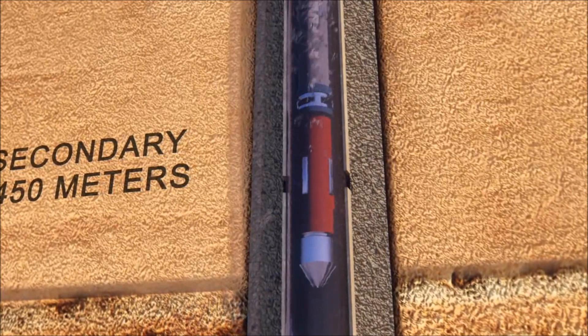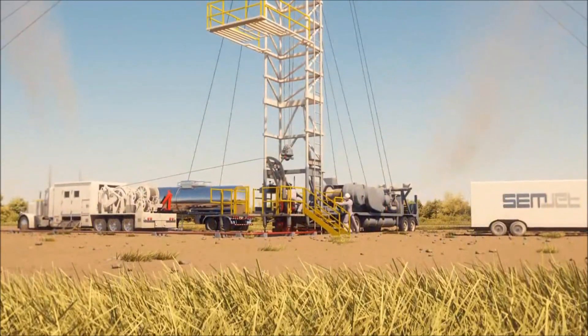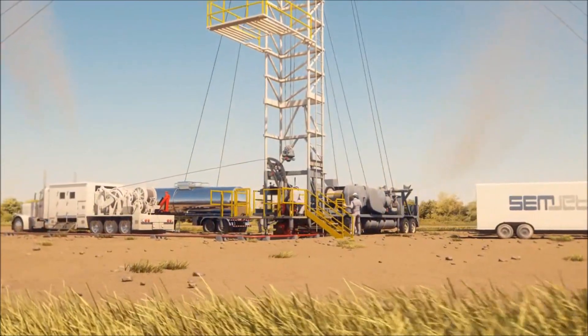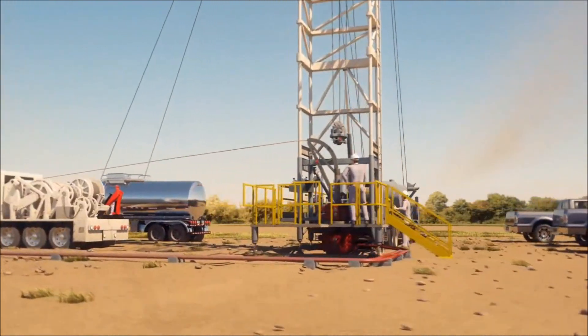The Simjet tool exit port is aligned with the milled casing window. Above ground, the microtubing and jetting assembly are lowered into the production tubing and enter the Simjet tool string.